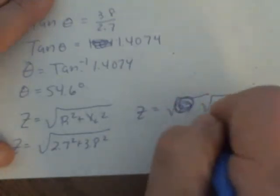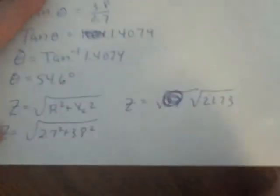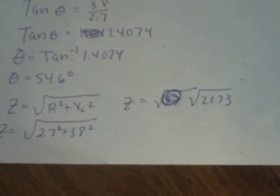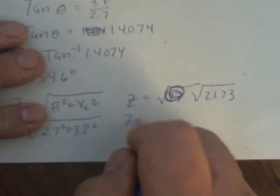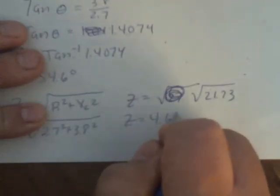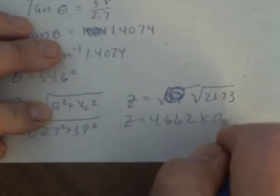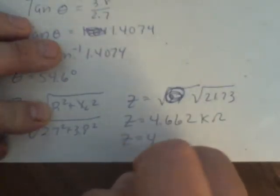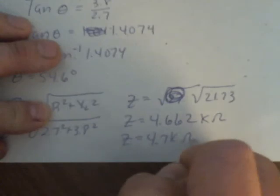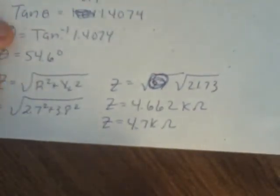So 2.7 squared plus 3.8 squared equals 21.73. I'm going to take the square root of that, round to the tens place. So what I got was 4.662, and that's k ohms, but I'm going to make it 4.7 k ohms. So I've solved everything I need to solve.